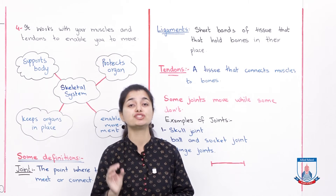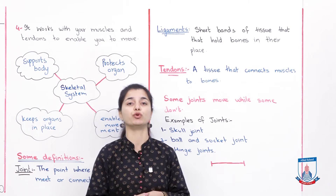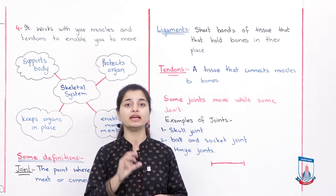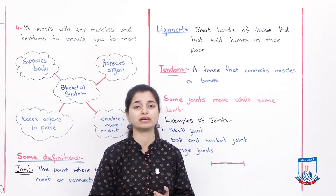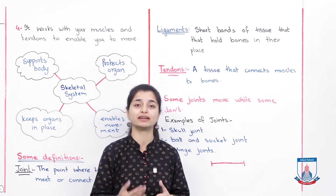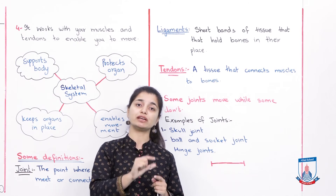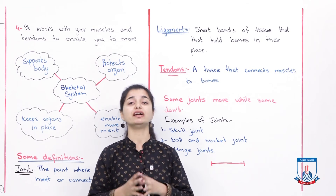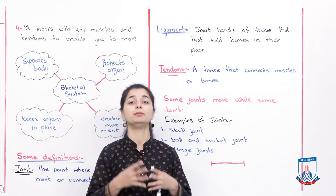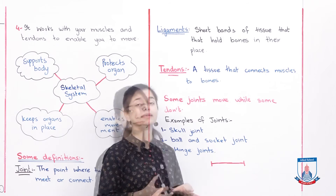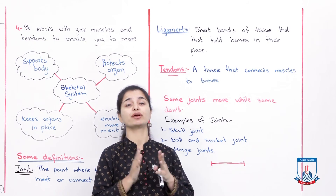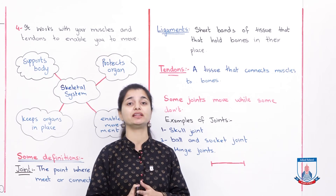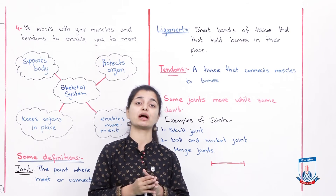The next definition is ligaments. Ligaments are short bands of tissue that hold bones in their place. Tissue is a group of cells. Cells are the smallest unit of your body. When many cells group together, we call it tissue. When many tissues group together, we call it an organ. So ligaments are small, short bands of tissue that keep the bones held in place.